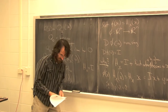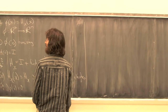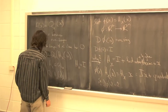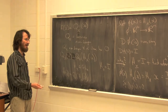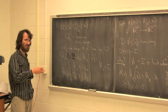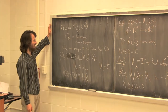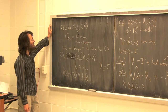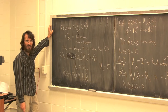The next thing I want to do is talk about why the non-degeneracy of the Hessian is really a transversality condition, and motivate what I'm going to say about the transversality condition.